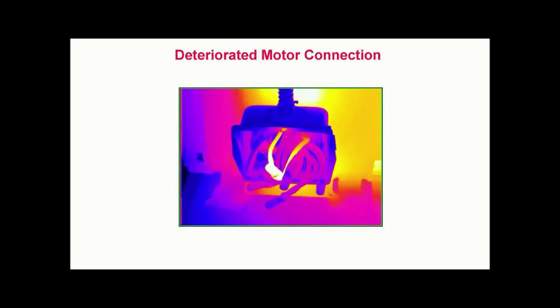Deteriorated motor connection. Here we see a thermal pattern caused by a loose or deteriorated electrical connection within the junction box of a motor. Since thermal imagers cannot see through solid materials, the junction box cover has been removed to provide a clear line of sight to the connections.